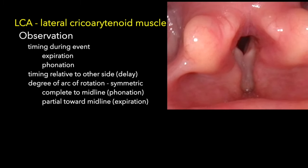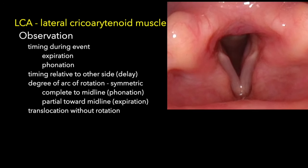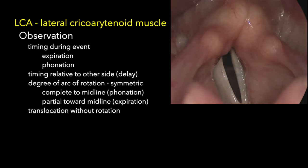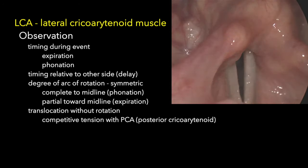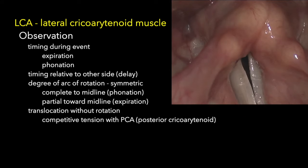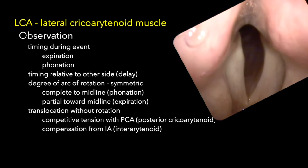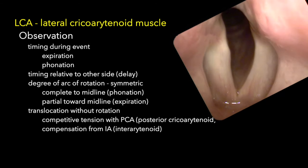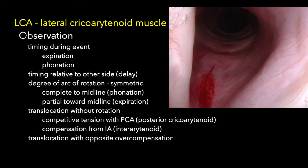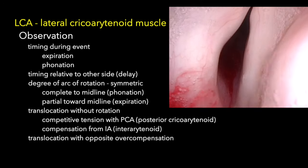So someone with COPD will tend to close nearly completely the vocal cords during expiration. And you can watch to see if the vocal process is translocating but not rotating. This can occur if there's competitive tension with the posterior cricoarytenoid muscle tending to hold it open and limit the amount of closure. It can also be if the LCA muscle is weak and the interarytenoid is compensating and pulling medially without rotating the vocal process.